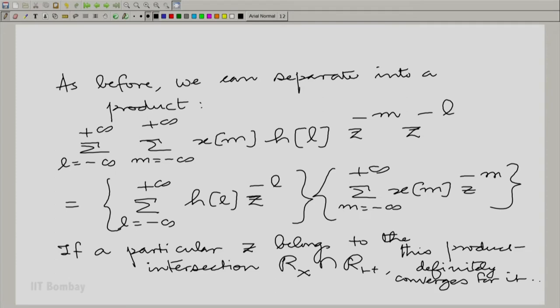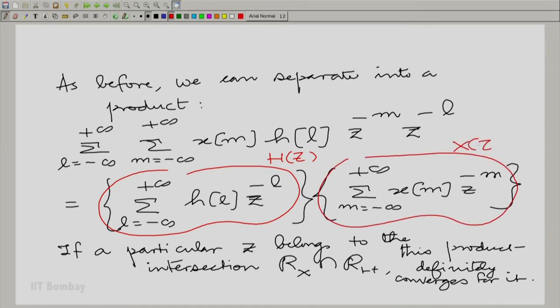So, therefore, if you look carefully what we have here is the Z transform capital H of Z. What we have here is the Z transform capital X of Z. And we are sure now that we have at least the intersection in the region of convergence.